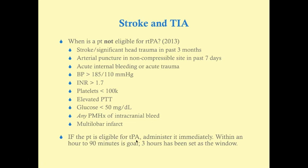If the patient is eligible for tPA, administer it as quickly as possible — ideally within 60 to 90 minutes from the onset of symptoms. Three hours has been set as the established window, after which tPA becomes less and less useful. However, current discussion suggests the window may extend up to four and a half hours. Aim for within 90 minutes at best, and hopefully within three hours.